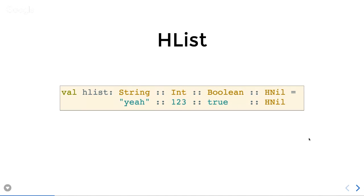An HList, on the other hand, can contain more than one type of things. The H stands for heterogeneous, meaning it can contain different types of things. The type of the HList is made up of the types of each of the things in the list. So this one has the type String :: Int :: Boolean :: HNil, and then it has the values underneath — a String, an Int, and a Boolean.